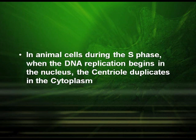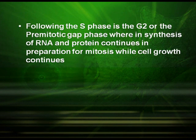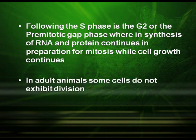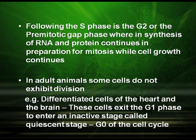In animal cells, during the S phase, when DNA replication begins in the nucleus, the centriole duplicates in the cytoplasm. Following the S phase is the G2 or the pre-mitotic gap phase, wherein synthesis of RNA and protein continues in preparation for mitosis while cell growth continues. In adult animals, some cells do not exhibit division — for example, differentiated cells of the heart or the brain.